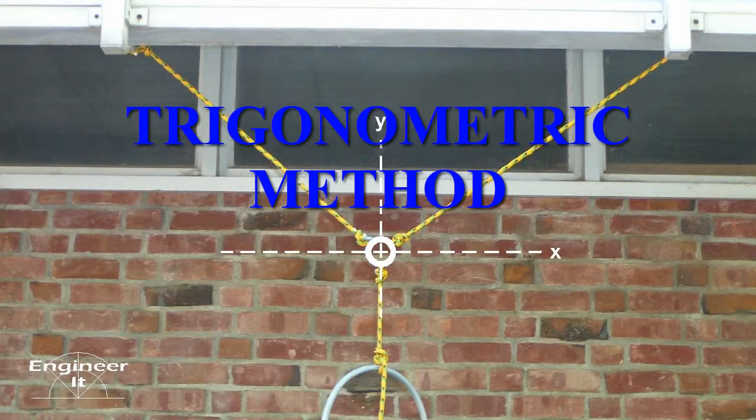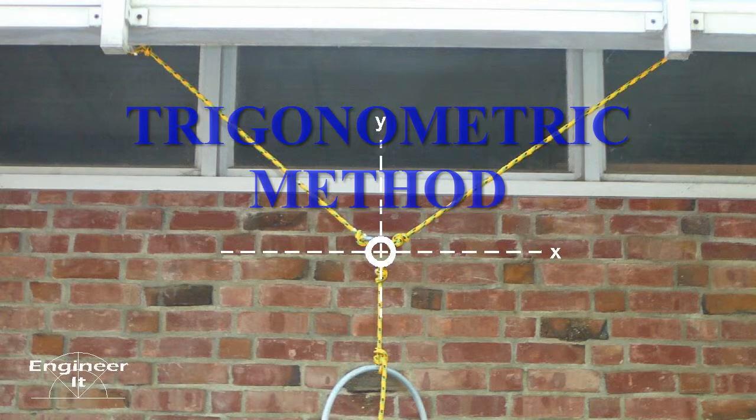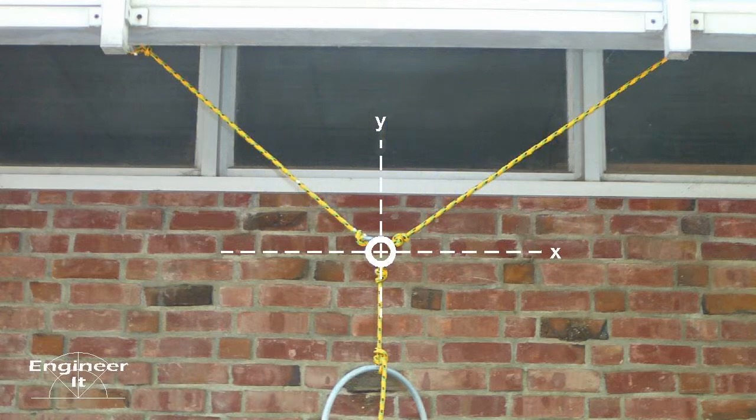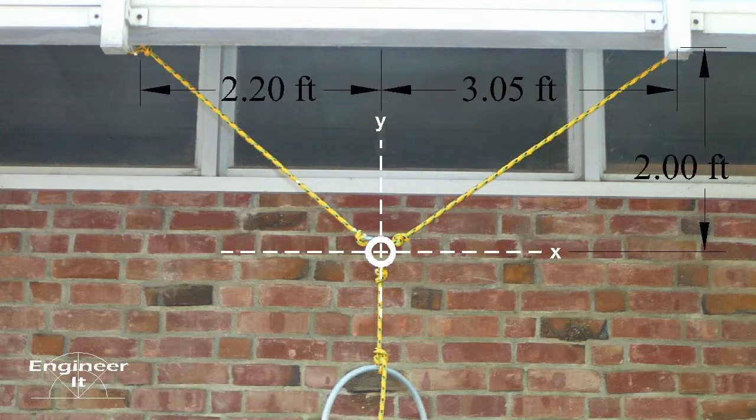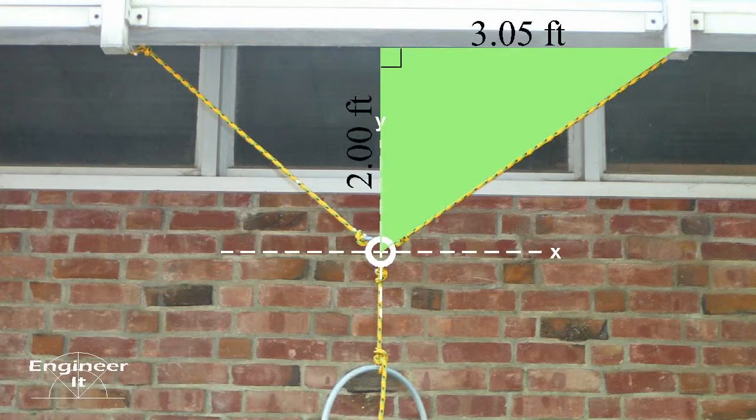The first method uses trigonometry to find the directions of each vector and the magnitude of its components. Go back to look at the simple geometry. Measure some distances and solve for the angle of the ropes. These dimensions fit a right triangle.